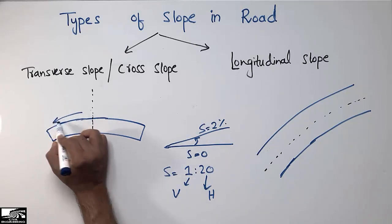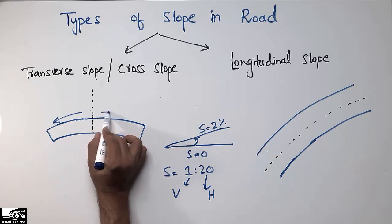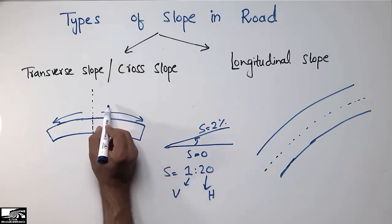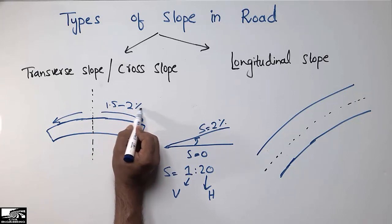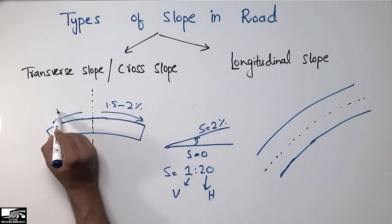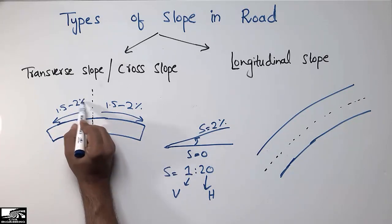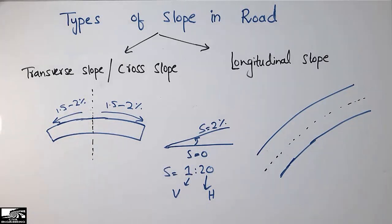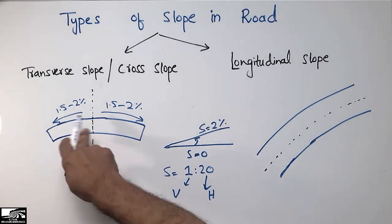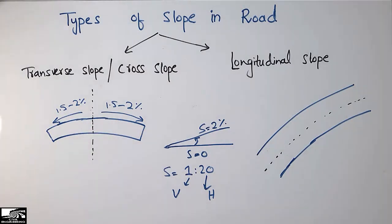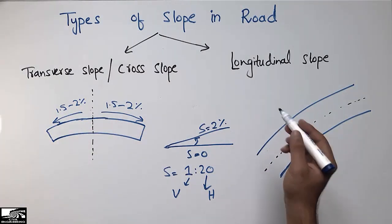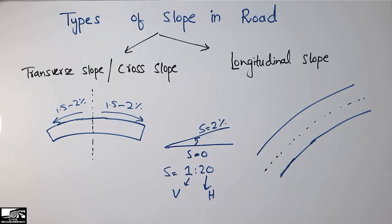In the case of transverse slope, the allowed slope range is 1.5 to 2 percent. This is the slope range for the transverse or cross slope.